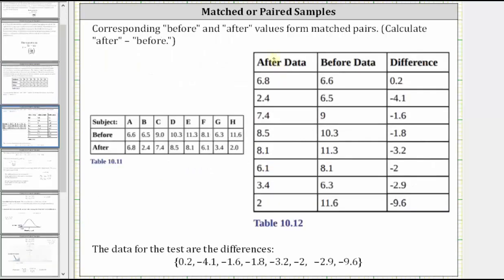The first column shows the after data. The second column shows the before data. The third column shows the differences. So the third column is the data we use to perform a single sample hypothesis test. So the data is listed here below.